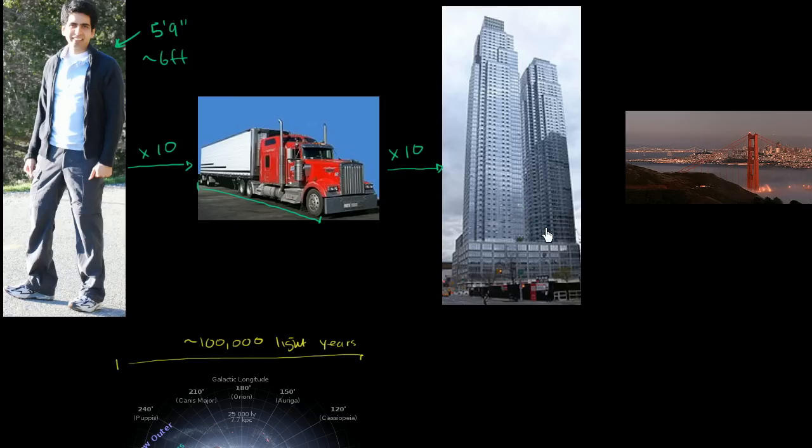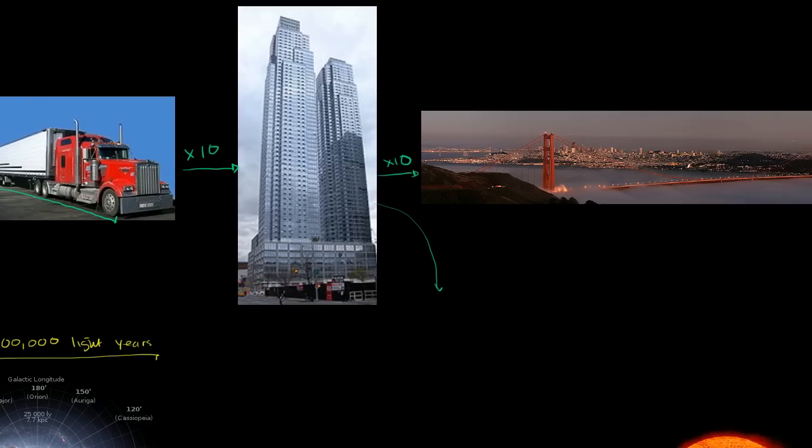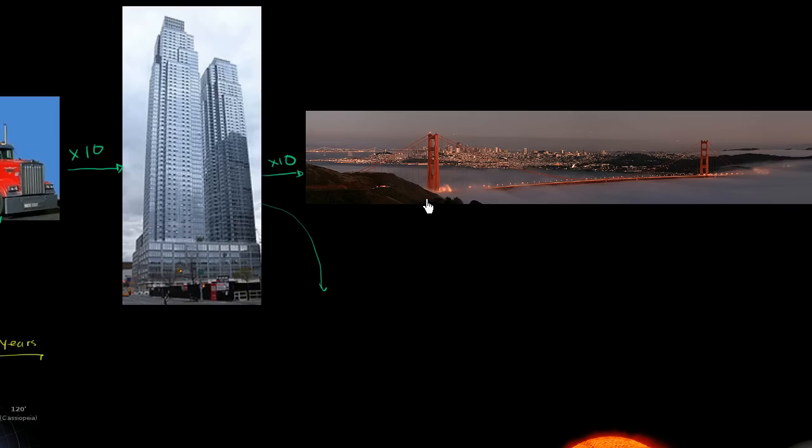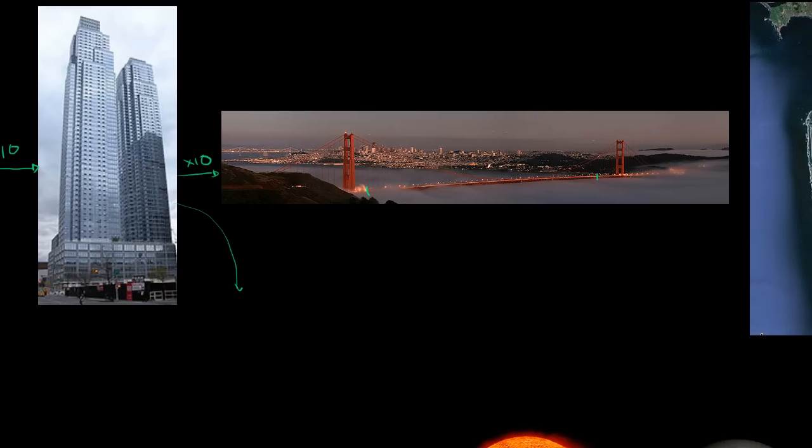Now, if you took that skyscraper and if you were to lie it down 10 times in a row, you'd get something of the length of the Golden Gate Bridge. And once again, I'm not giving you the exact numbers. It's not always going to be exactly 10. But we're now getting to about something that's a little on the order of a mile long. The Golden Gate Bridge is actually longer than a mile, but if you go within the twin spans, it's roughly about a mile. That gives you a sense of a mile.